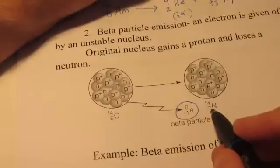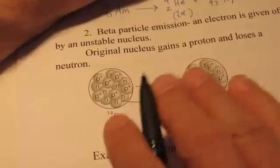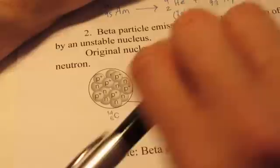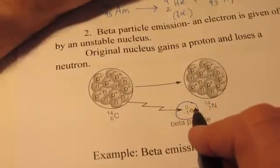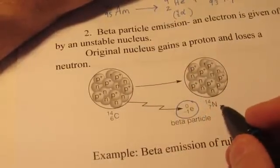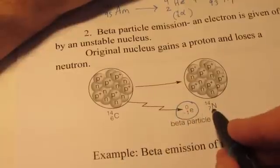Well, how do we gain a proton from a neutron? Well, that neutron needs to lose a negative charge. A neutron is neutral. If it kicks out a negative charge, it now becomes positive. So that's how a neutron turns into a proton. So the atomic number goes up by one.